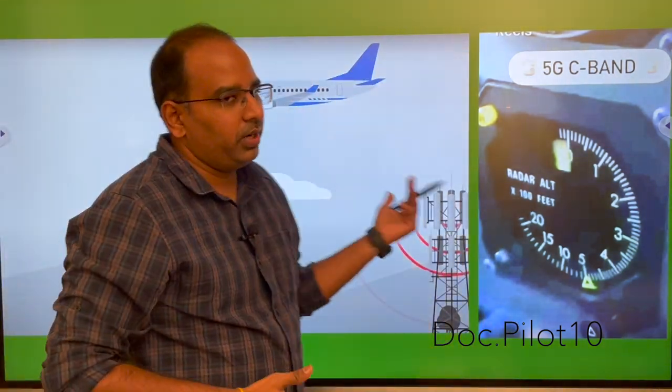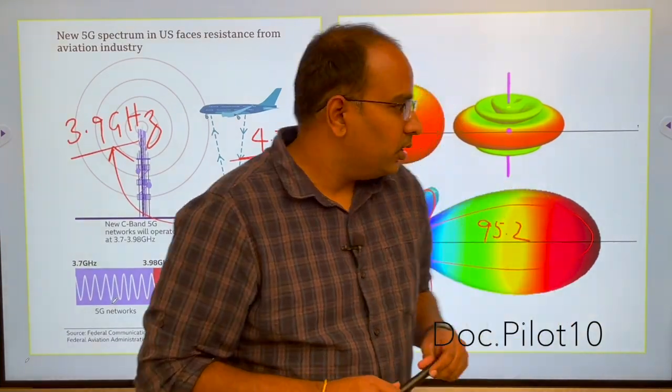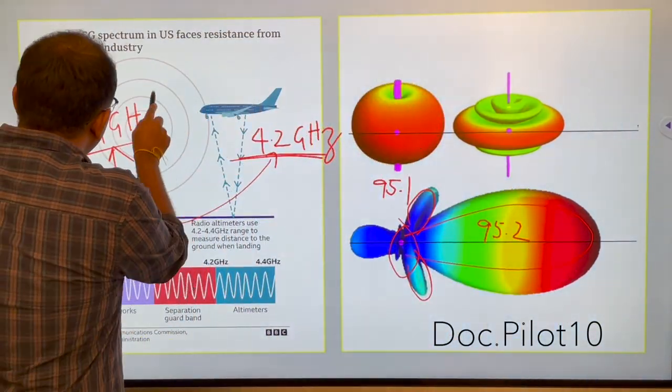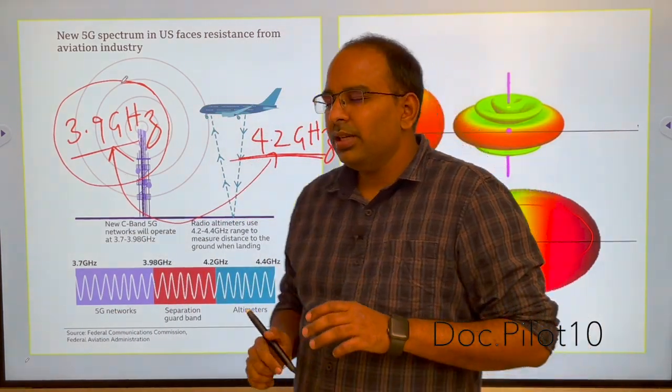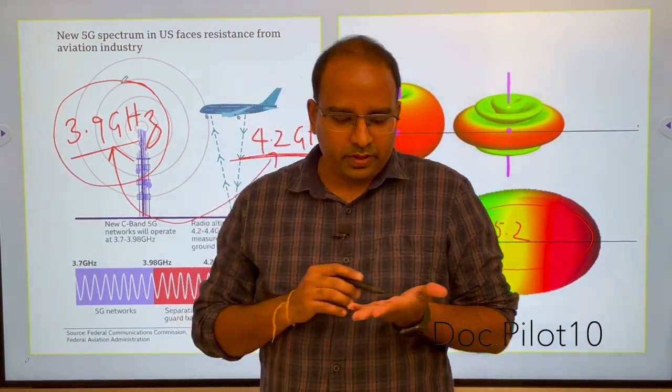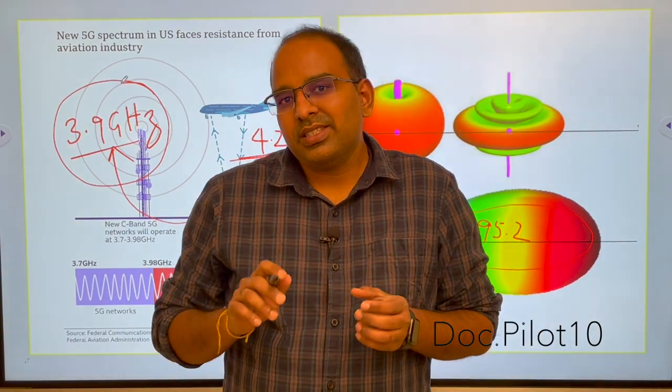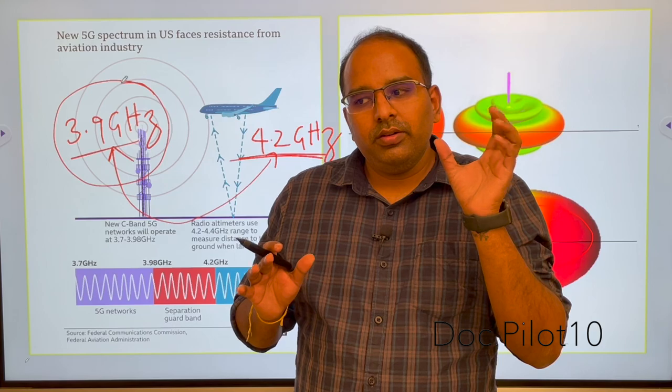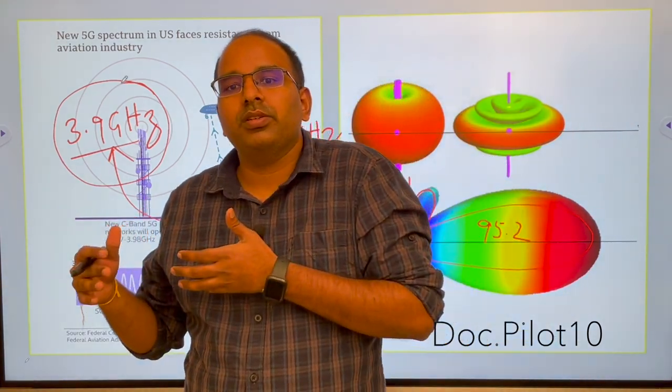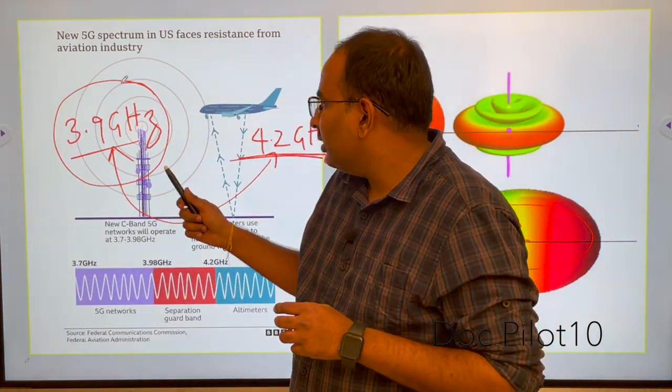Now the question is why do these 5G towers want 3.9 gigahertz only? Because they wanted to increase the speed on your mobile from 4G to 5G. As the frequency increases, the ability of the radio waves to transmit a lot of information increases. So that is why they want higher frequencies.